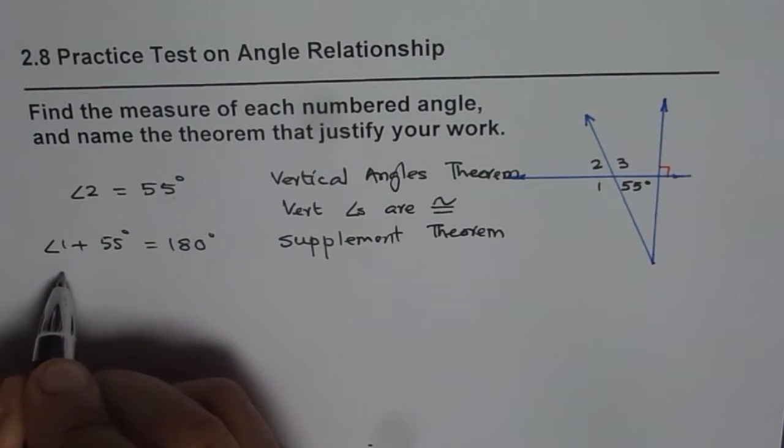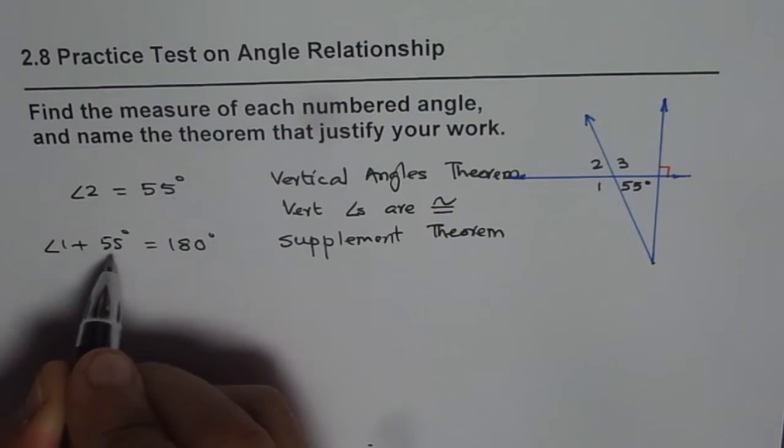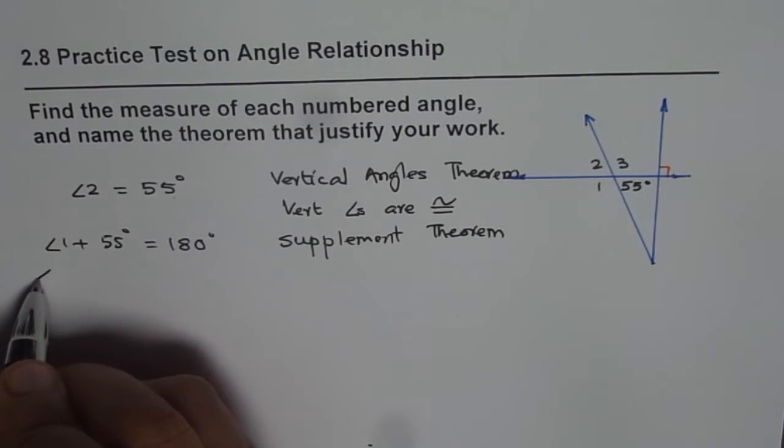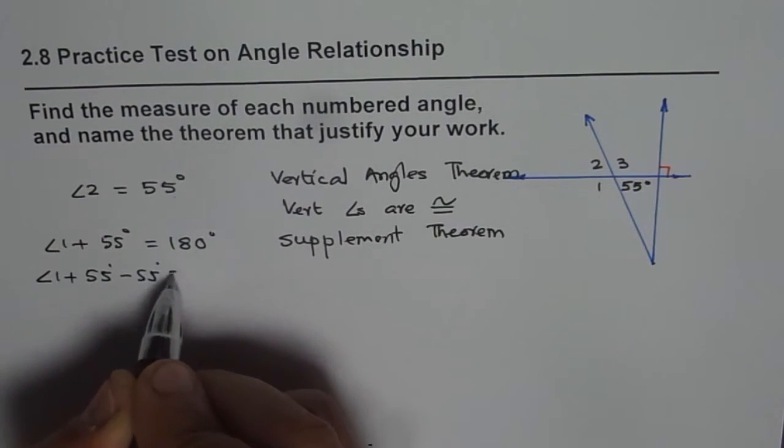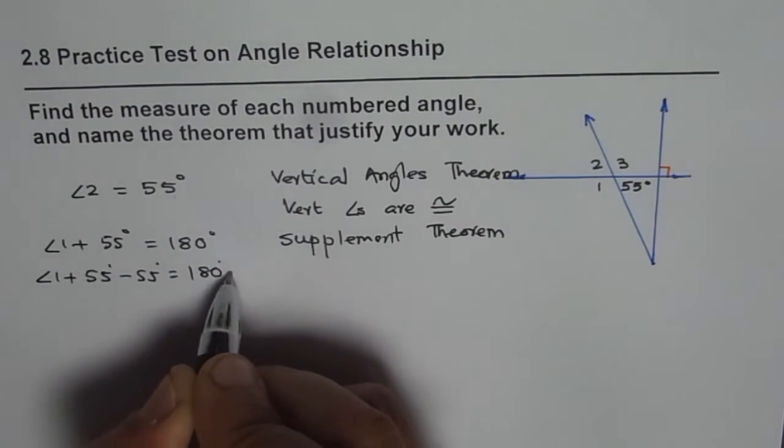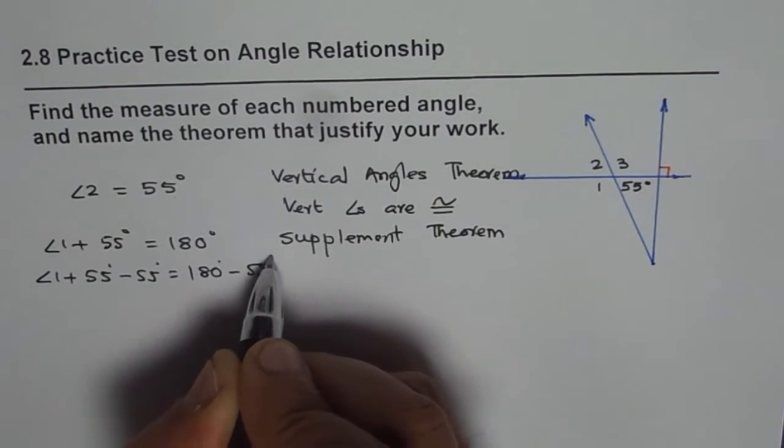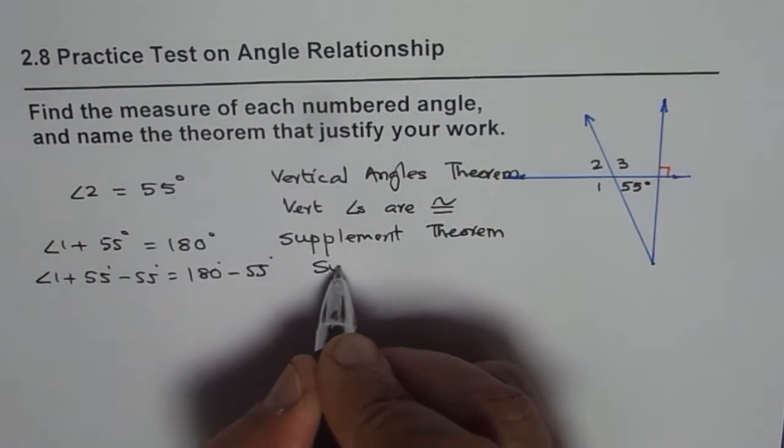So we can say measurement of angle 1 is equal to—we can take away 55 from both sides. So we have angle 1 plus 55 minus 55 equals 180 minus 55. So that is the subtraction property.